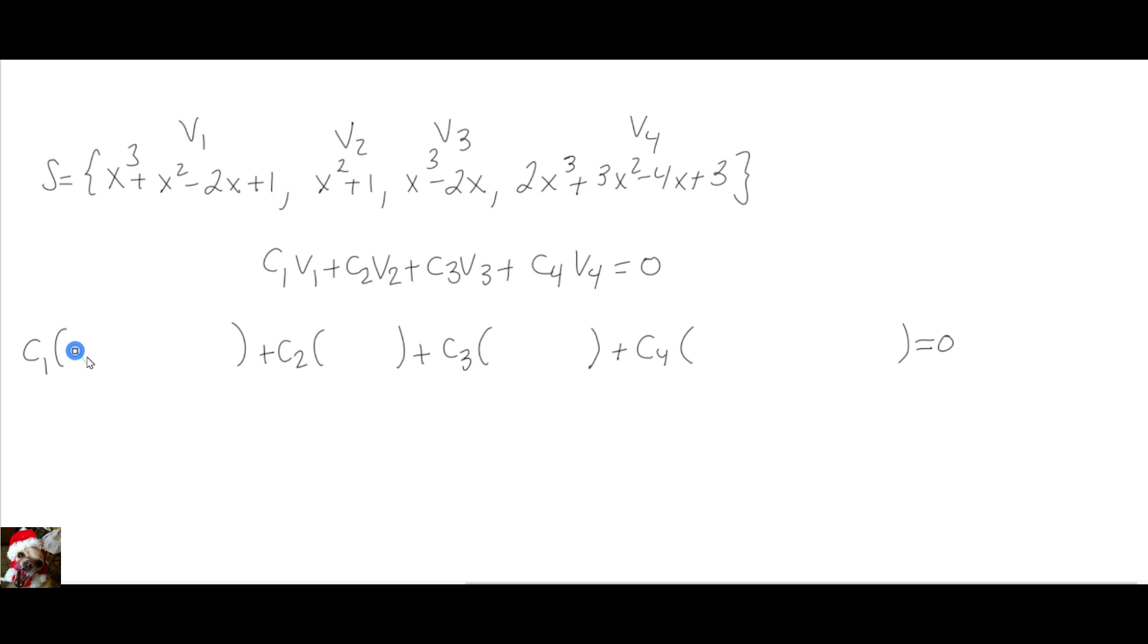Inside those parentheses, I'm going to pick the values of V1, V2, V3, V4. So, the value of V1 is the first polynomial, which is x cubed plus x squared minus 2x plus 1. The second polynomial is x squared plus 1. The third vector, or third polynomial, is x cubed minus 2x. And lastly, we write down the fourth vector, which is 2x cubed plus 3x squared minus 4x plus 3.